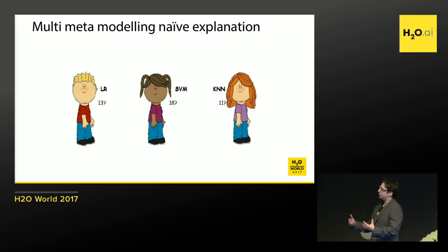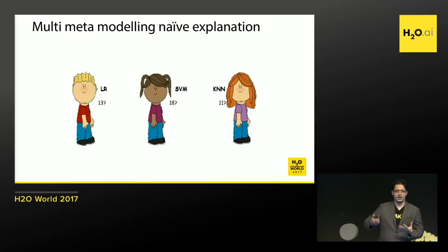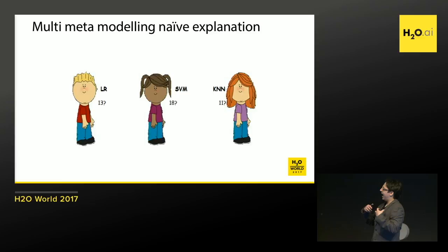You can imagine these students as models, because they have a way of taking some input data — here it's some question about physics — they process it through their brains, they have some mechanics, some skills, and they output some predictions. And a simple way to combine these is an average.